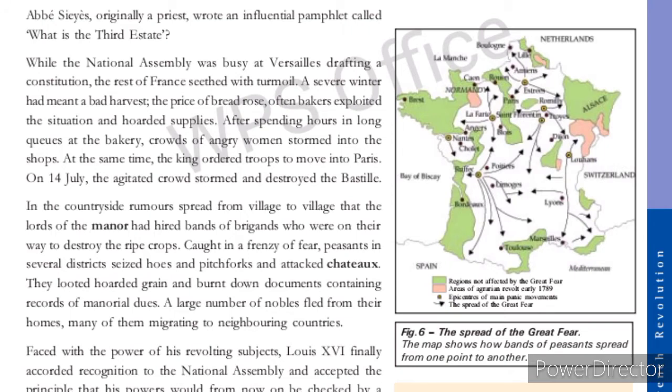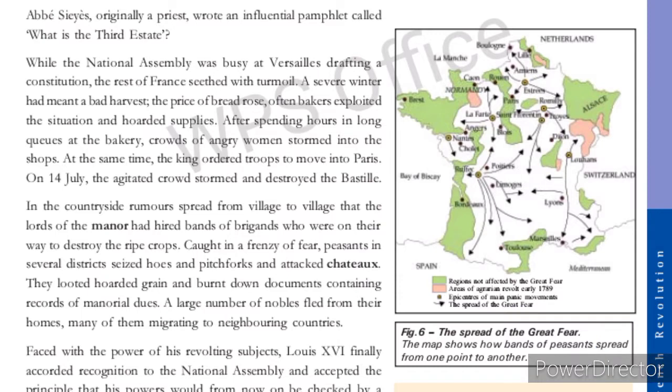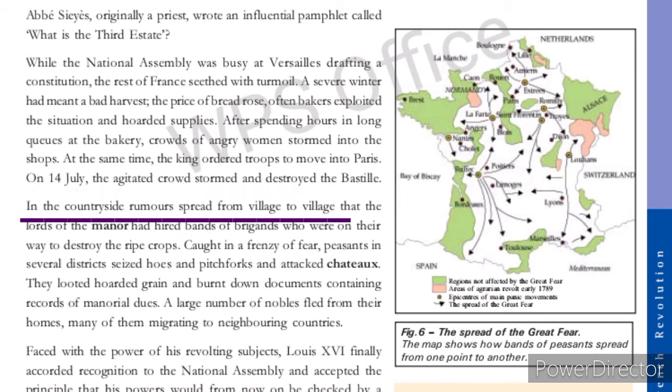While the National Assembly was busy at Versailles drafting the constitution, the rest of France faced a bad harvest, which led to an increase in the price of bread. This made bakers exploit the situation and hoard supplies. After spending hours in long queues at the bakery, crowds of angry women attacked the shops. At the same time, the king ordered his troops to move into Paris. On 14th July, the agitated crowd stormed and destroyed the Bastille.